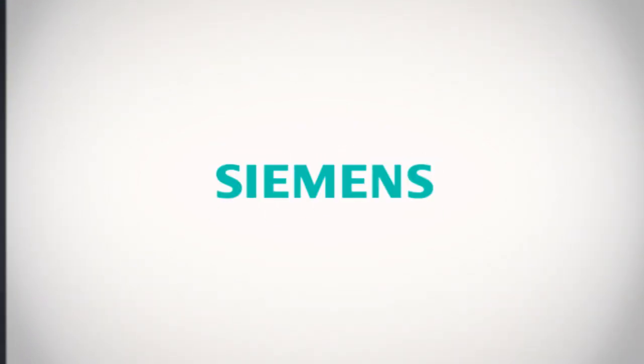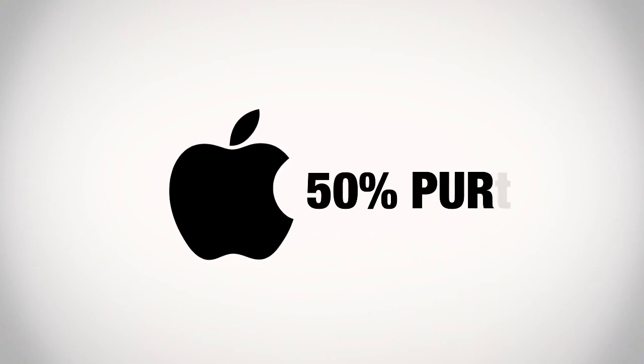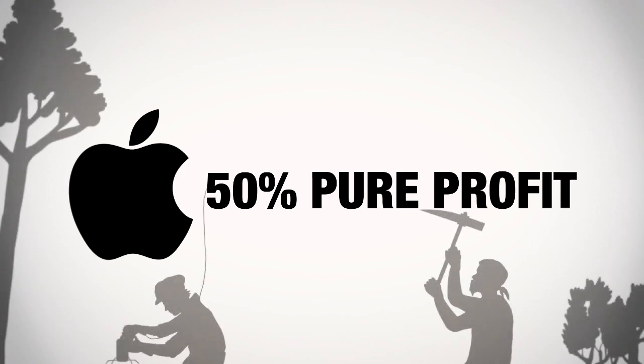A look at the value chain shows the profit margin is particularly high with more expensive brands. For example, about half the price of an iPhone is pure profit for Apple. Such high profits should not be achieved at the expense of workers or the environment.